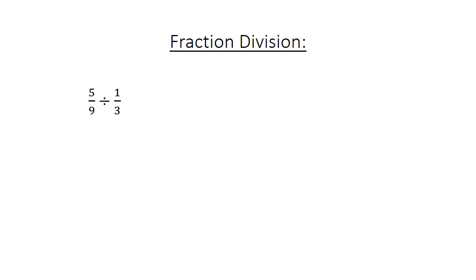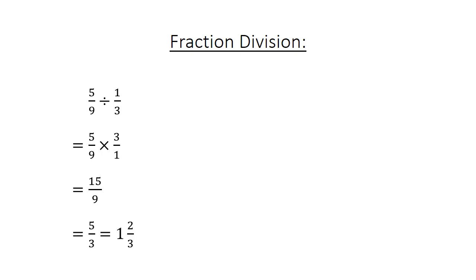Fraction division: 5 over 9 divided by a fraction. You replace the division sign with a multiplication sign and invert the last fraction. 5 times 3 equals 15, 9 times 1 equals 9, which equals 15 over 9, which is equal to 5 over 3, or 1 and 2 over 3.